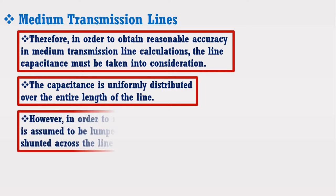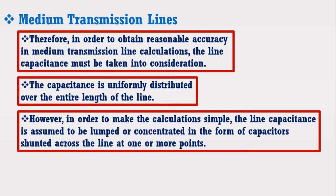The capacitance is uniformly distributed over the entire length of the line. However, in order to make the calculation simple, the line capacitance is assumed to be lumped or concentrated in the form of capacitors shunted across the line at one or more points.